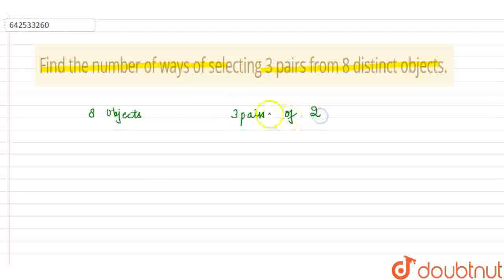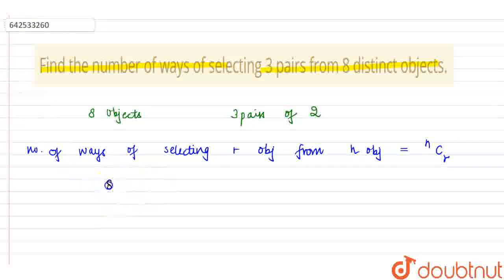So when this is the case, we know that number of ways of selecting R objects from N objects is nothing but equals to NCR. And we know that in this case, out of 8, we will select 2 objects at a time. So 8C2, this becomes first pair.